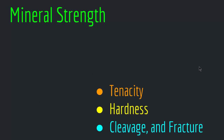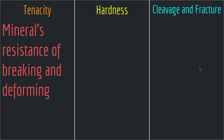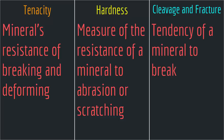Another physical tool used to identify a mineral is mineral strength — a mineral's ability to withstand stress and deformation. Mineralogists use terms like tenacity, hardness, cleavage, and fracture. Tenacity is a mineral's resistance to breaking and deforming, hardness is the measure of resistance to abrasion or scratching, and cleavage and fracture describe the tendency of a mineral to break. The most important is hardness. Geologists use a scale from 1 to 10, with 1 being the softest and 10 being the hardest — diamond is the hardest mineral. You rub the mineral against something hard like glass, a nail, your fingernails, or a knife to estimate hardness, because certain minerals have certain hardness values.